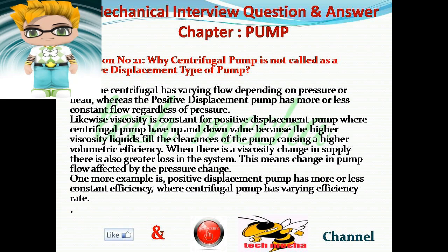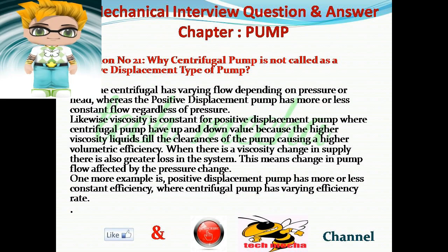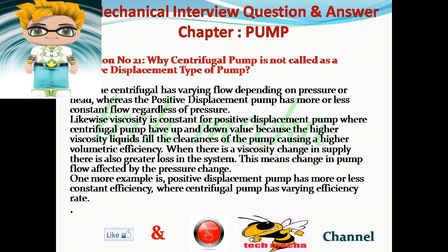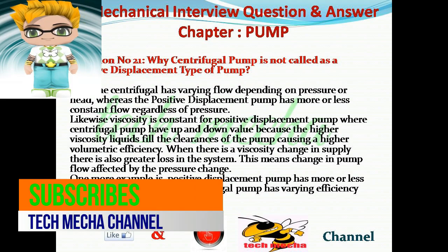Question number 21: Why is a centrifugal pump not called a positive displacement type pump? Answer: The centrifugal pump has varying flow depending on pressure or head, whereas the positive displacement pump has more or less constant flow regardless of pressure. Likewise, viscosity effects are constant for positive displacement pumps, whereas centrifugal pumps have variable values because higher viscosity liquids fill the clearances of the pump, causing higher volumetric efficiency. When there is a viscosity change in supply, there is also greater loss in the system, meaning pump flow is affected by pressure change.